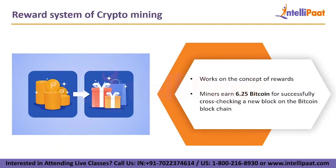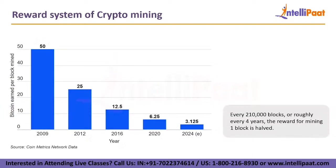The reward system of crypto mining works on the concept of rewards. A miner who guesses the precise transaction first and updates it on the blockchain is currently rewarded around 6.25 Bitcoin. As seen from the graph, miners used to get as much as 50 Bitcoins back in 2009, decreasing to 25 in 2012, then 12.5 in 2016, and currently about 6.25 per block. It is estimated that by 2024, miners would get only about 3.125 Bitcoins per block. For every 210,000 blocks, or roughly every 4 years, the reward for mining one block is halved.